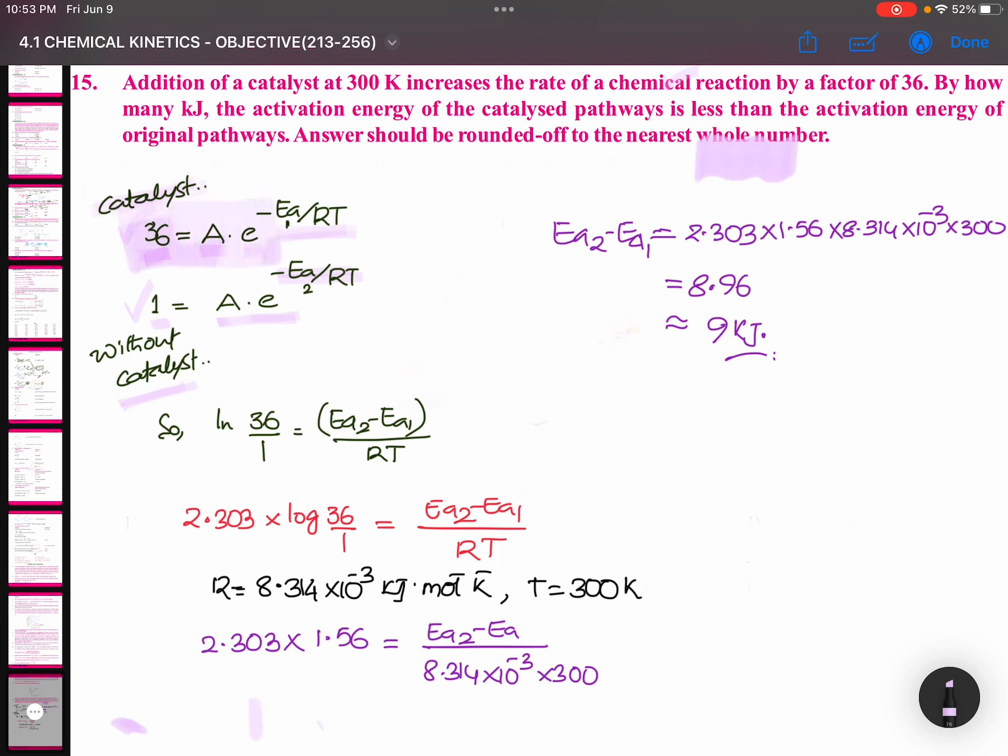36 equals A times e to the power of minus Ea by RT with the catalyst. 1 equals A times e to the power of minus Ea by RT without catalyst. Now we are taking a relation between them. ln(36/1) equals Ea2 minus Ea1 by RT. Right?